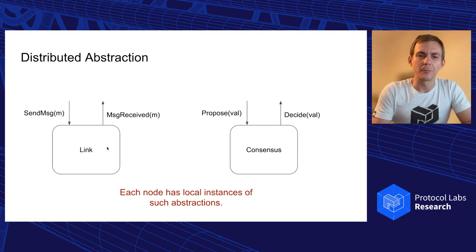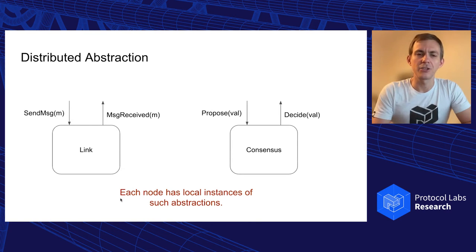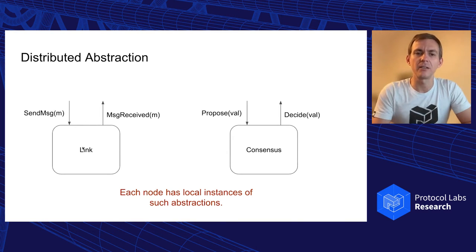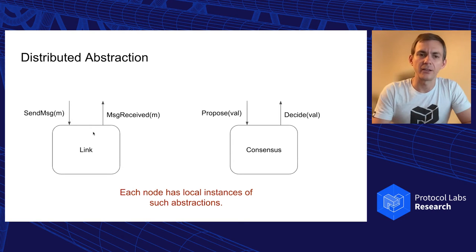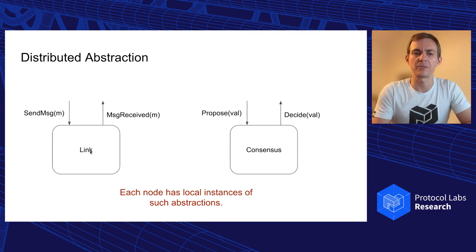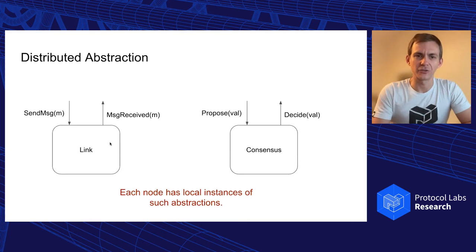That's why distributed algorithms are very often described in terms of distributed abstractions. A distributed abstraction is some kind of a black box that consumes events and produces events. Each node usually has a local instance of such a distributed abstraction, and each node feeds events to the abstraction and consumes events that the abstraction produces. For example, if we have two nodes with a link abstraction, the link might consume send-message events and produce message-received events.